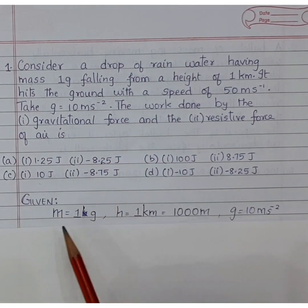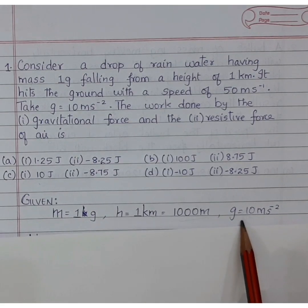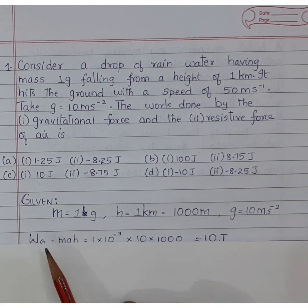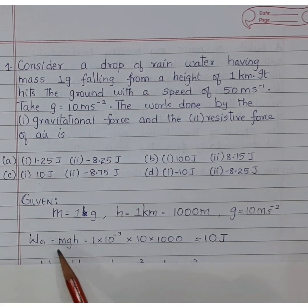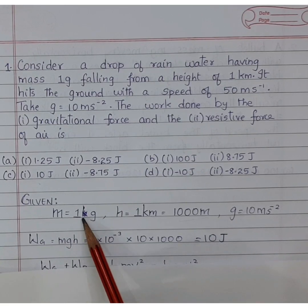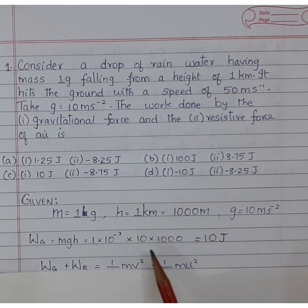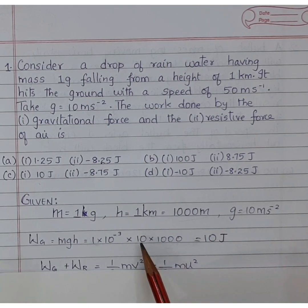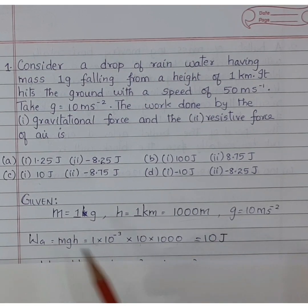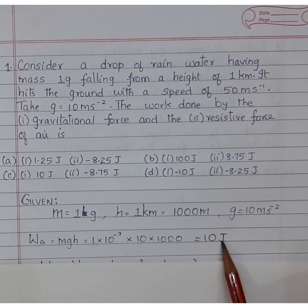So given is mass, height and acceleration due to gravity. Work done due to gravitational force is nothing but mgh. Since mass is given in grams, I am converting that to kilogram. Height is given in kilometer, we have to convert that to meter and g value is 10. If I substitute, I will be getting 10 joules as the answer.